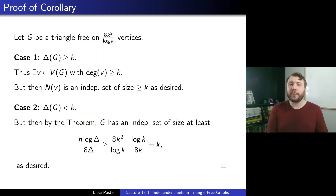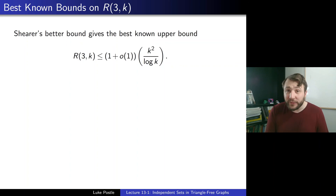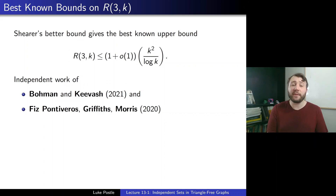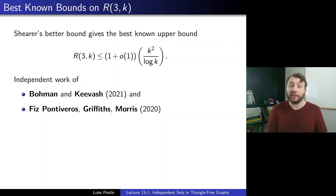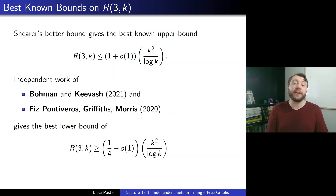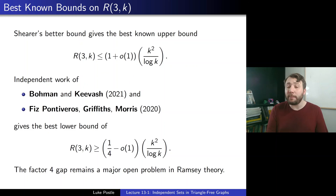The best known upper bound on R(3,k) comes from Shearer: it's at most (1 + o(1)) k² / log k. For lower bounds, independent work of Bohman-Keevash from 2021 and Fiz Pontiveros-Griffiths-Morris from 2020 (both actually from 2013, but long to referee) gives R(3,k) is at least (1/4 - o(1)) k² / log k. This leaves a factor-of-4 gap, which remains a major open problem in Ramsey theory.